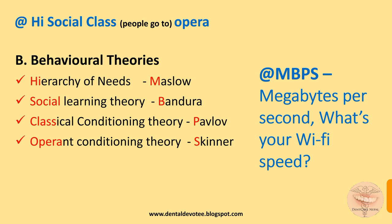For behavioral theories, use the mnemonic: 'High social class people go to opera.' This helps memorize the behavioral theories because people from lower socio-economic status cannot afford opera. 'High' hints at hierarchy of needs, 'social' at social learning theory, 'class' at classical conditioning theory, and 'opera' at operant conditioning theory.